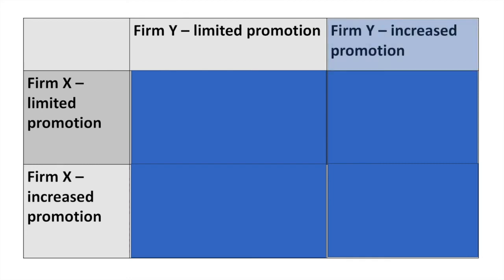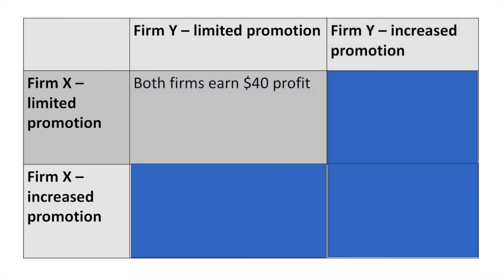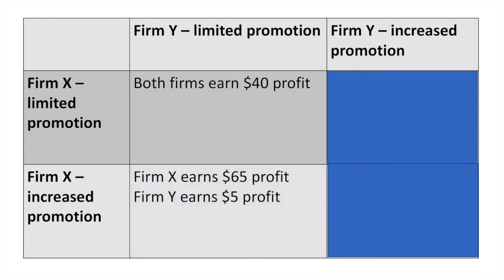In this example, I'll consider two competing firms, Firm X and Firm Y, and the influences on their decisions to increase the level of promotion for their products. Firm X has the choice to either continue with limited promotion or increase their level of promotion. Firm Y has the same choices. If both firms limit their promotion campaigns, both firms will earn a profit of $40. However, if only Firm X increases its promotion while Firm Y limits theirs, Firm X can earn $65 of profit — substantially more than the previous strategy — while Firm Y will be left with only $5 of profit.